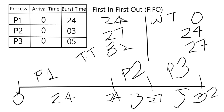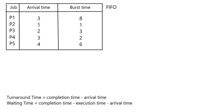We can derive common formulas from this. Turnaround time equals completion time minus arrival time — that matches the definition. For waiting time, the formula is completion time minus execution time minus arrival time, because a process may arrive late and we need to calculate the time it has stayed in the ready queue since it arrived. These formulas will be used in the next example.